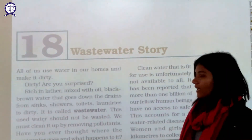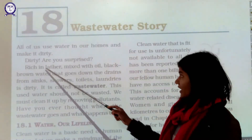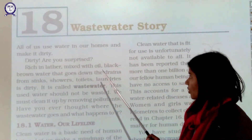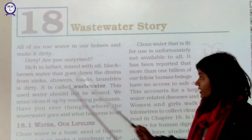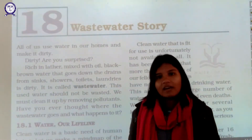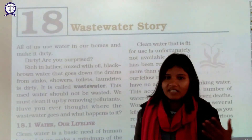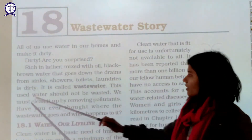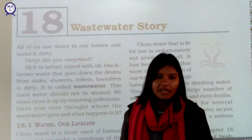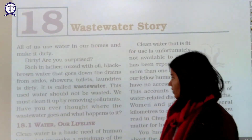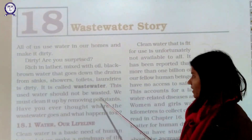All of us use water in our homes and make it dirty. Water rich in lather mixed with oil — the black-brown water that goes down the drain from your sink, from the shower, from the toilet, from laundries — is dirty. We cannot consume that water, so it is called waste water. All the water released from those sources is waste water. This used water should not be wasted; we must clean it up by removing the pollutants, otherwise we will face water scarcity.